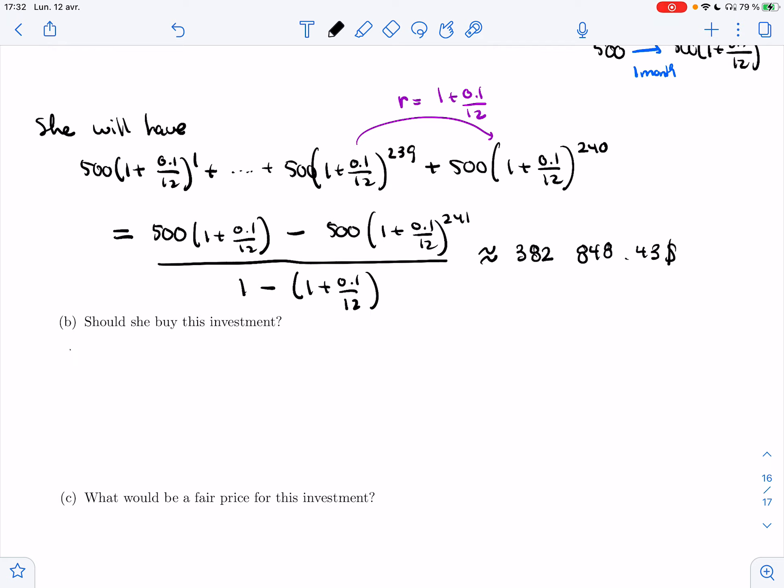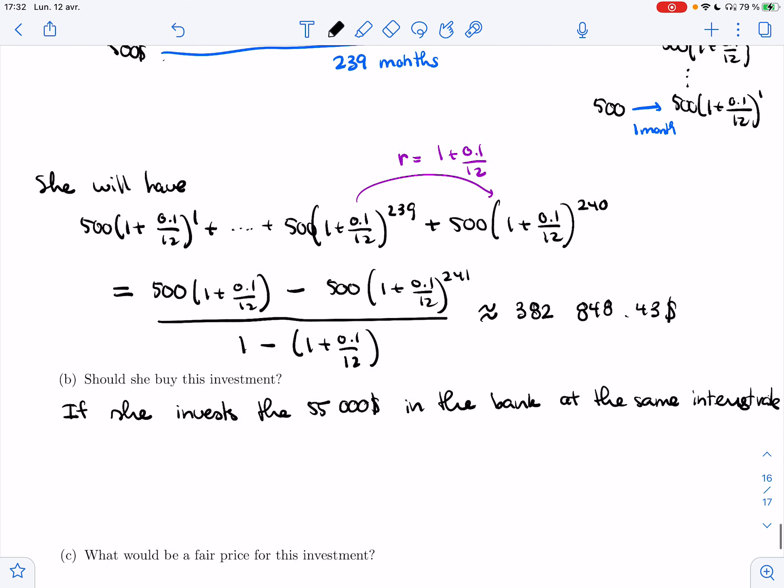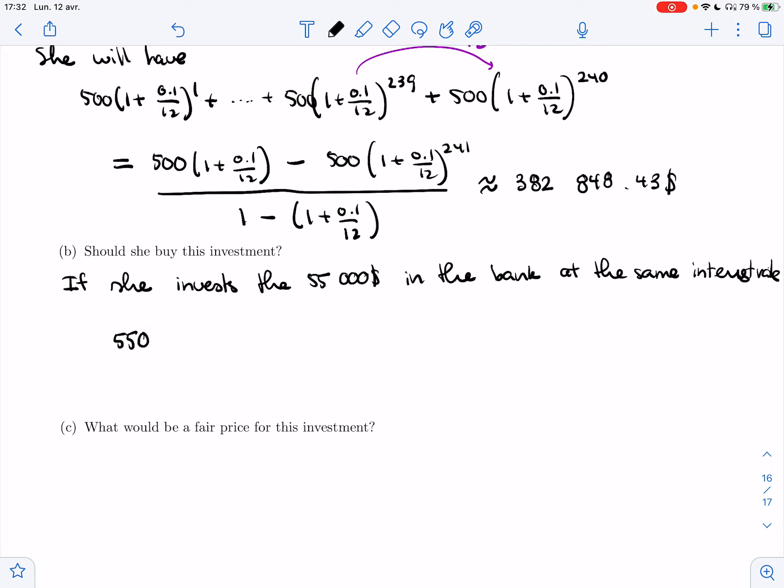So if she just invests the money in the bank account. She doesn't need to put every $500 in the bank account. She could just take the $55,000, not buy the investment and put that $55,000 in the bank at the same interest rate. So how much would she get? So $55,000 times (1 + 0.1/12)^240. How many months do we have in 20 years? We have 240 months.